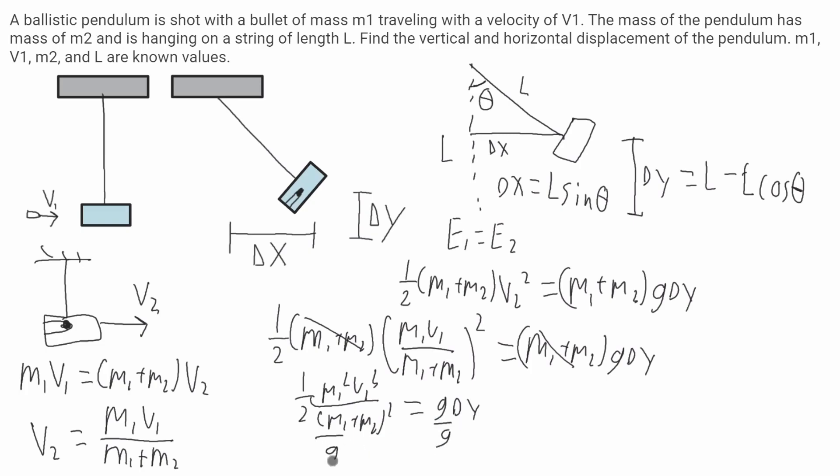And delta y will be equal to m1 squared v1 squared over 2g times m1 plus m2 squared. So that's my answer for delta y.